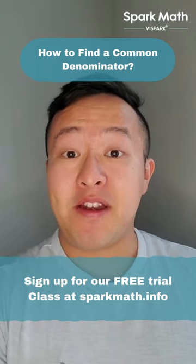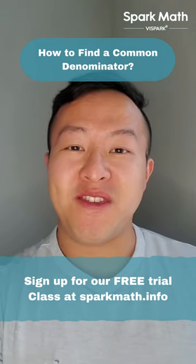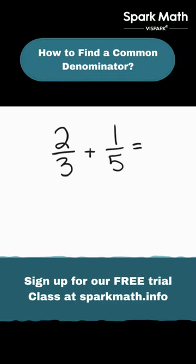Forgot how to find a common denominator? Here's one way you can do it. To make them common, we have to multiply the top and bottom of each fraction by the other denominator. So 2 thirds is multiplied by 5, and 1 fifth is multiplied by 3.